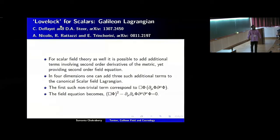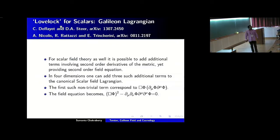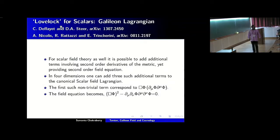The term ∂_μφ ∂^μφ is the canonical kinetic term modulo a minus-half factor, and a box-φ term sits in the Lagrangian. As you can explicitly see, it is linear in the double derivative of φ — it is a degenerate Lagrangian. The field equation obtained from this Lagrangian involves only second derivatives of φ; no higher derivatives appear. Hence, you essentially escape the Ostrogradsky instability in this case.